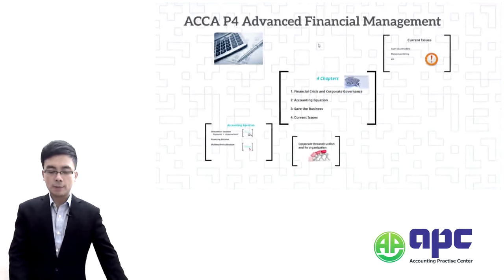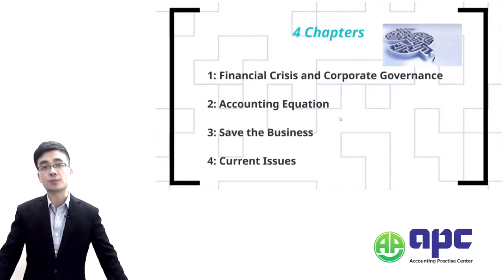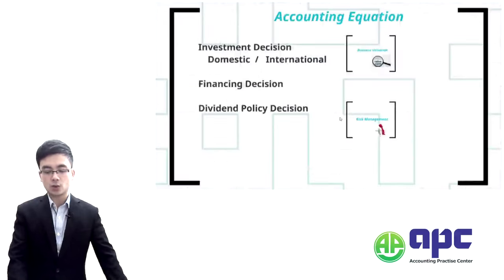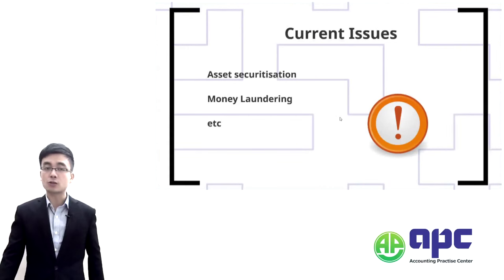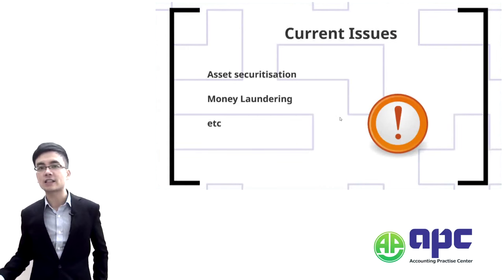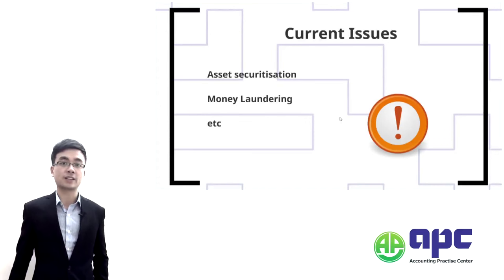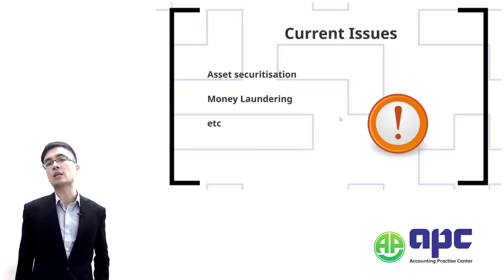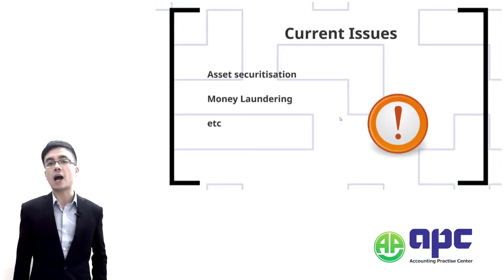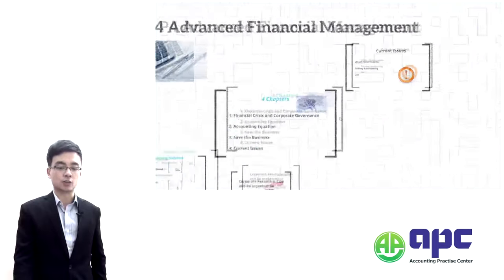The final chapter covers current issues — including asset securitization (as mentioned earlier), money laundering, and poor trading systems. We will also explain the roles of different financial institutions, such as the WTO, the World Bank, and the IMF.